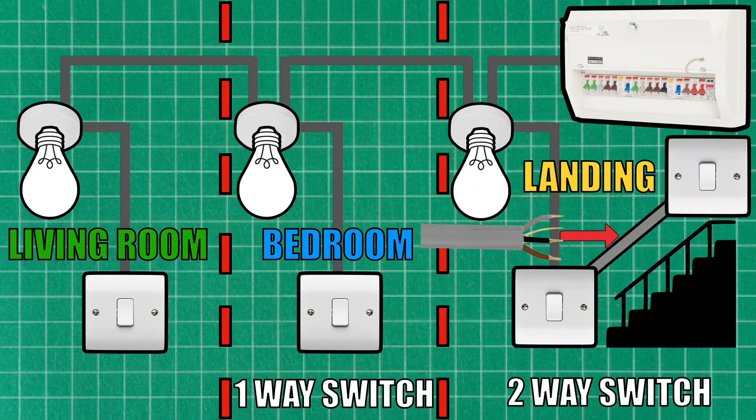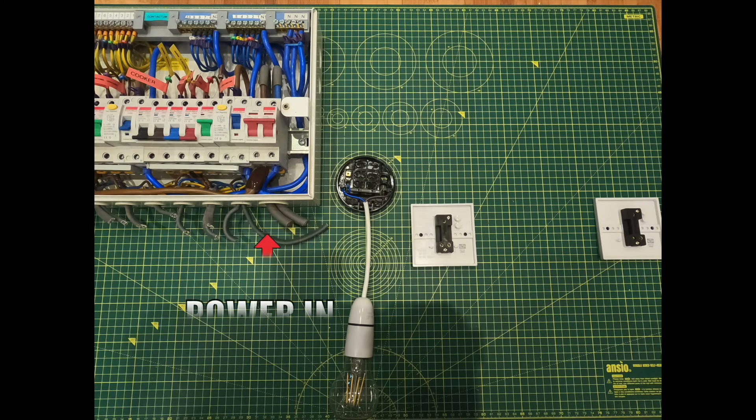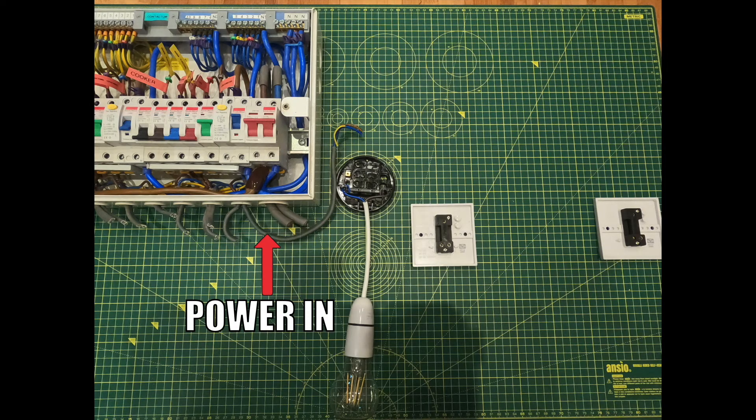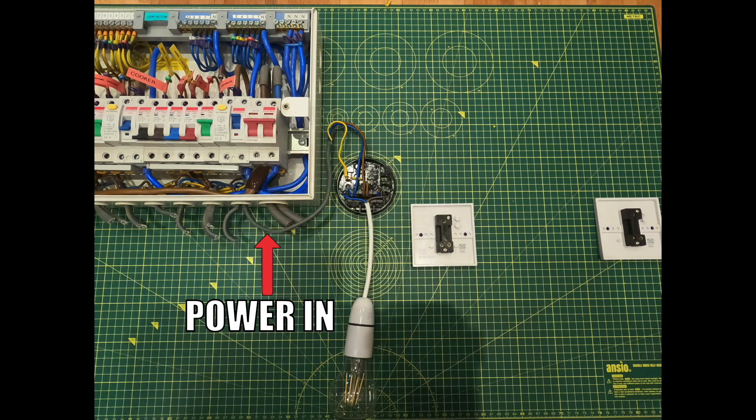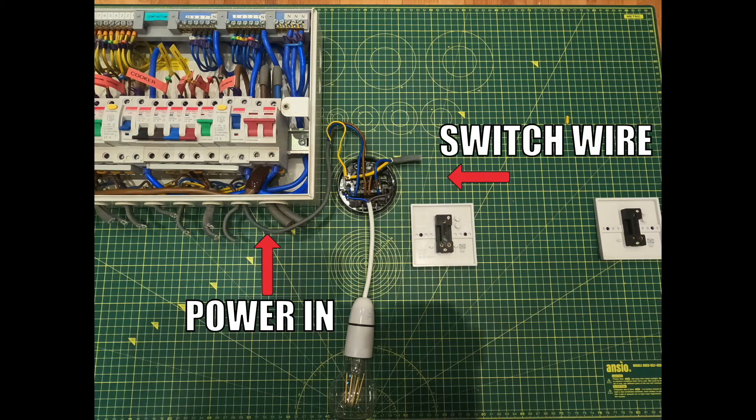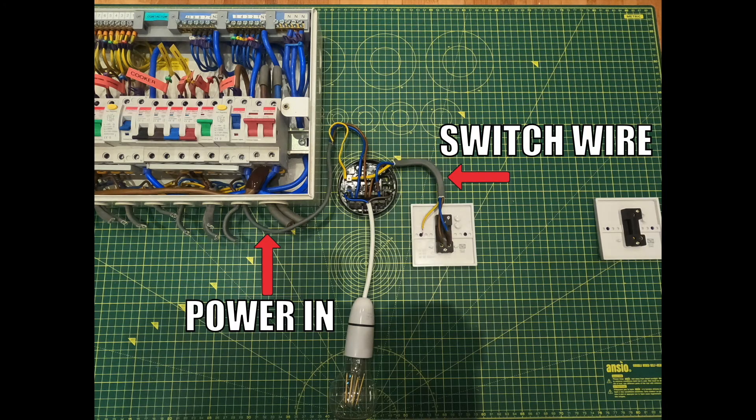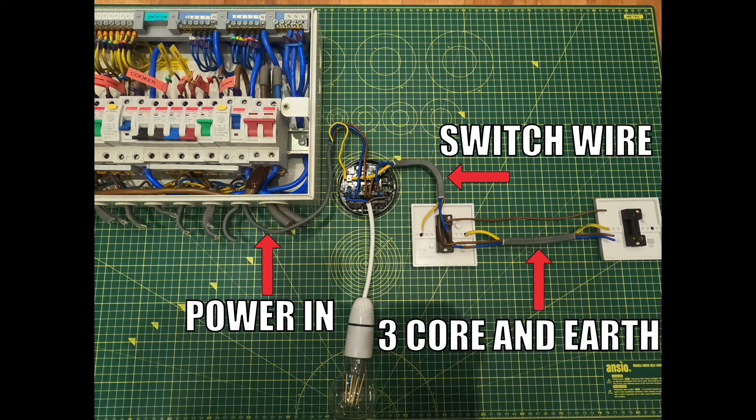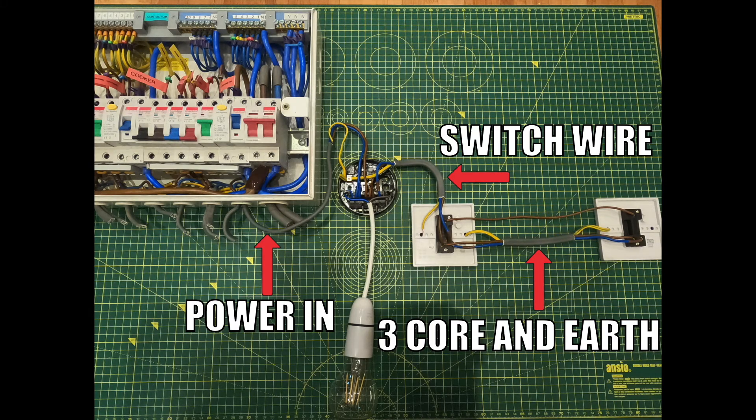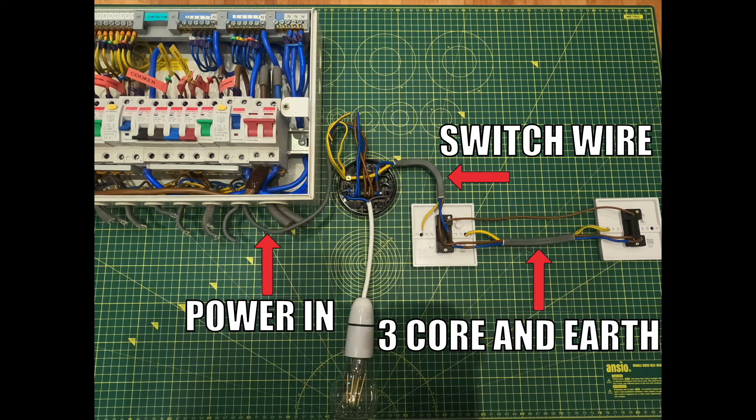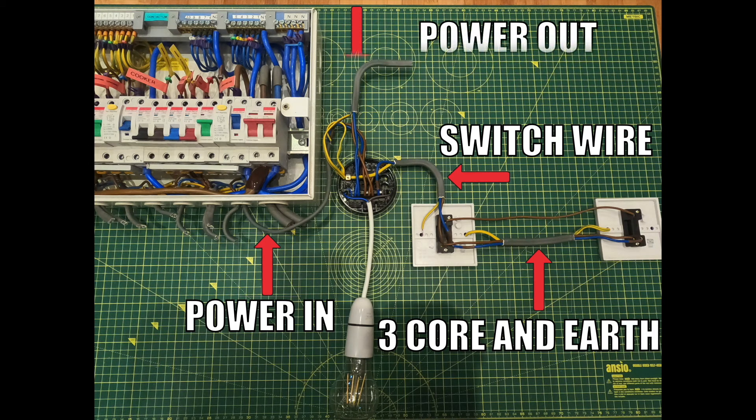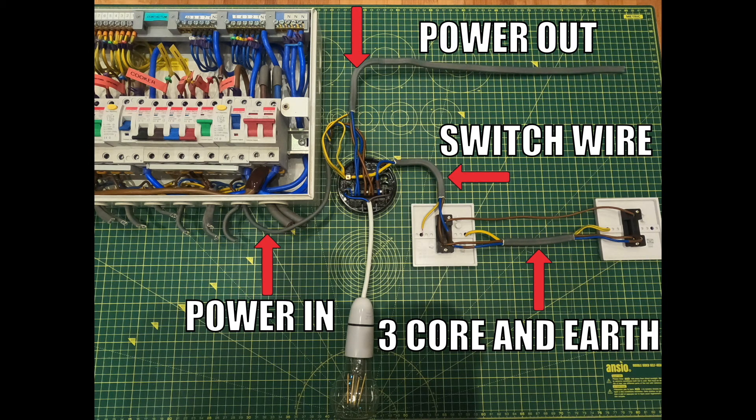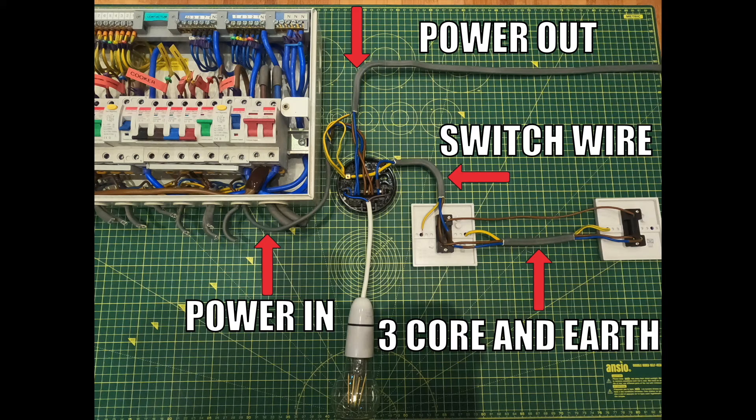So if we take a look at this illustration here, we have power either coming from the previous lamp or, if it's the first run, it comes from the consumer unit. Then we have another piece of twin and earth that goes to the switch, which is called the switch wire. Then we have a piece of three core and earth which links the switches together. And then finally, on the last leg of the run, we have our power out cable, and that just daisy chains from one light to the next light. So let's take a look at this installation in a little more detail now.